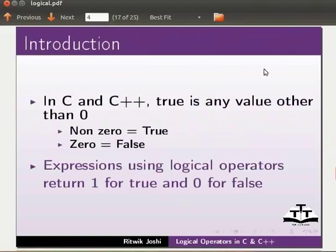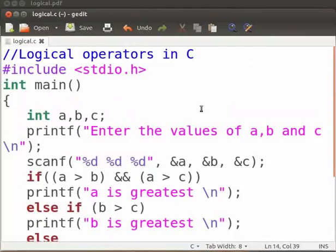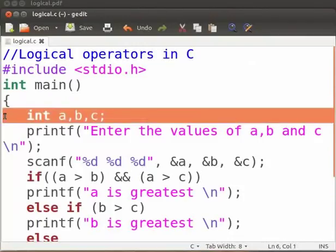Now I will explain the logical operators with the help of an example. Here is the program for logical operators in C. Inside the main block, this statement declares the variables a, b and c as integers.